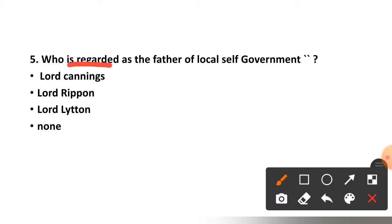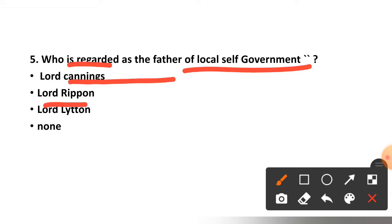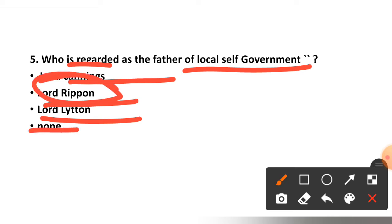Who is regarded as the father of local self-government? Lord Canning, Lord Ripon, Lord Lytton, or none? The correct option is option number two — Lord Ripon.